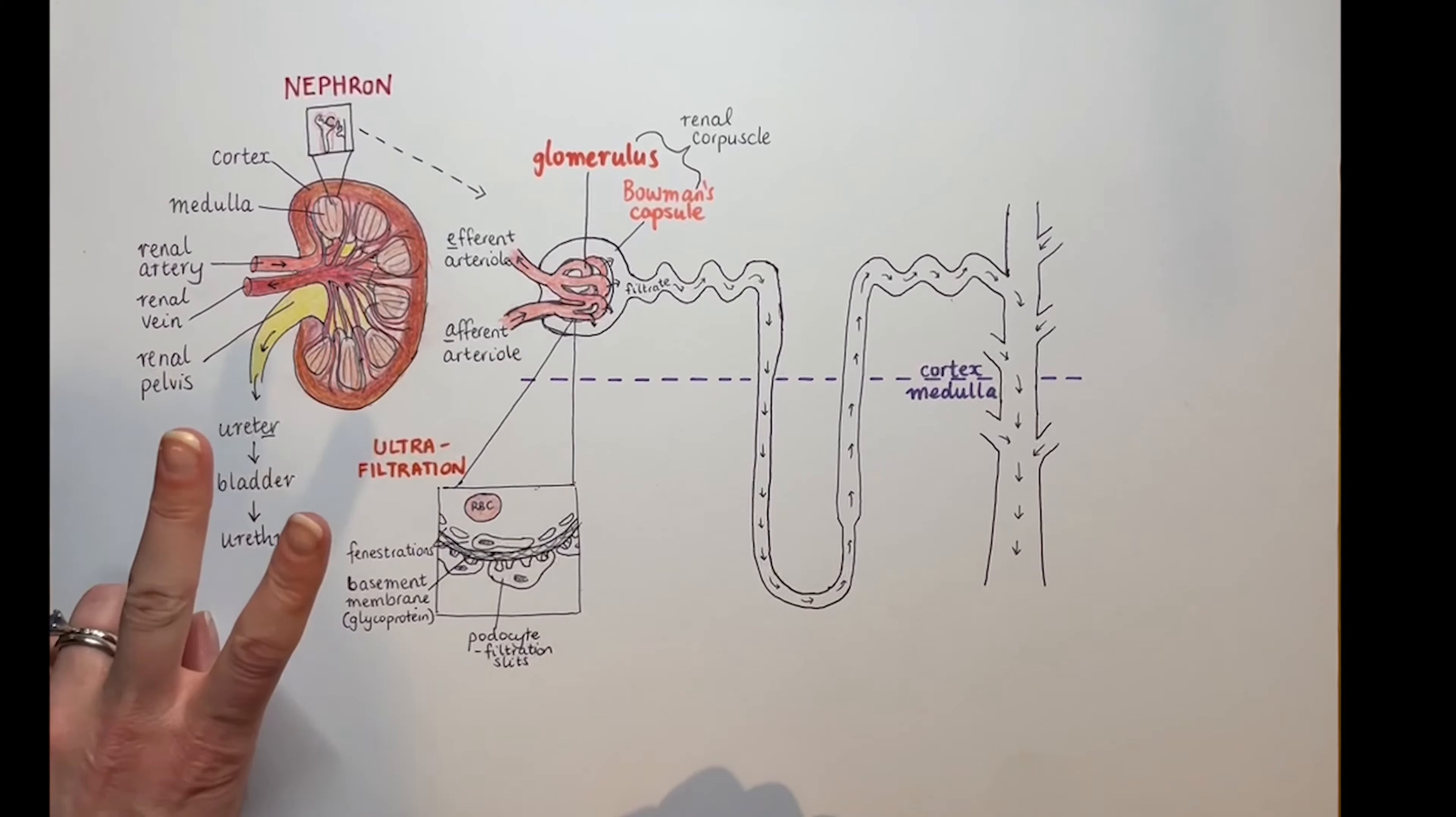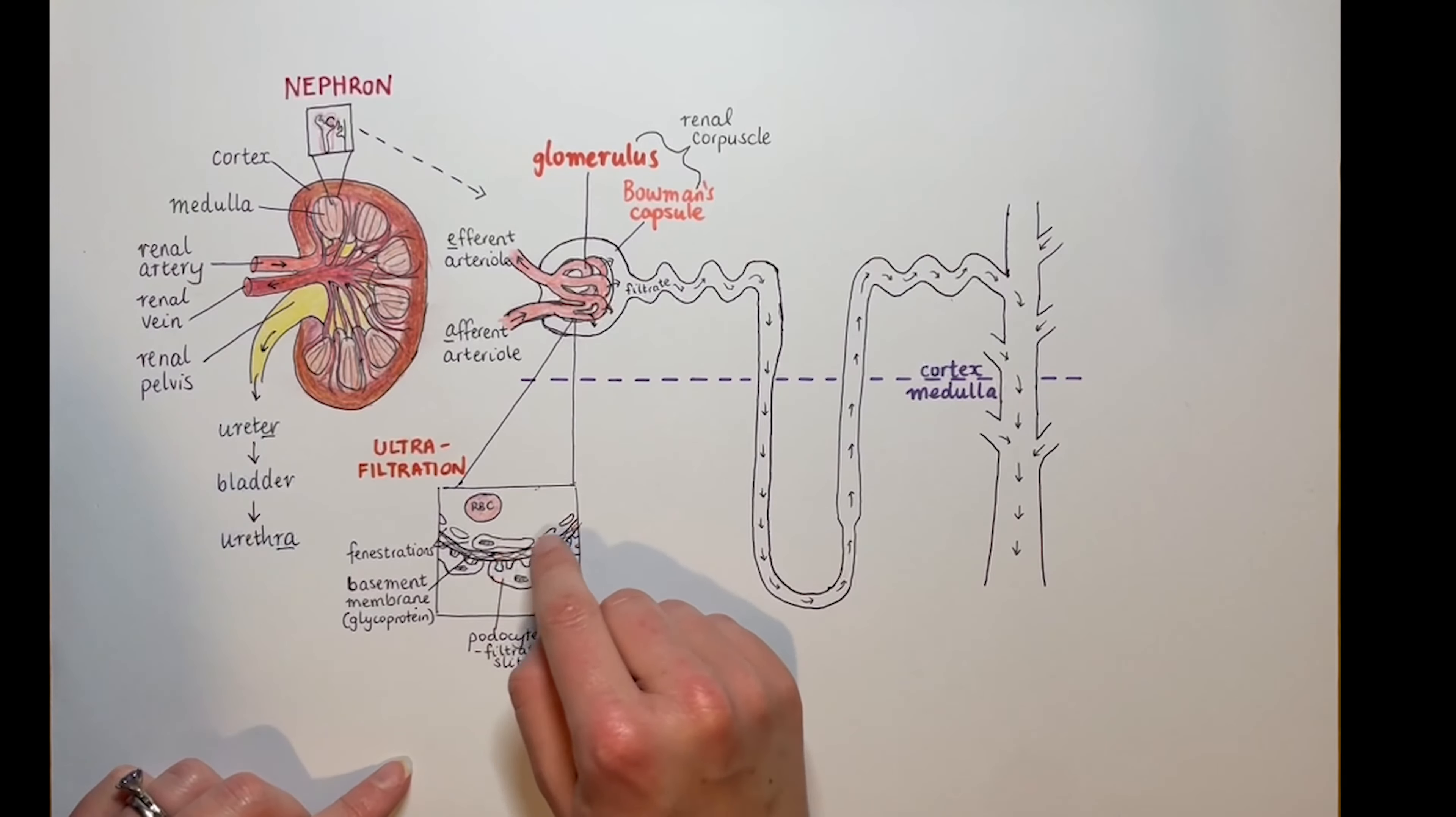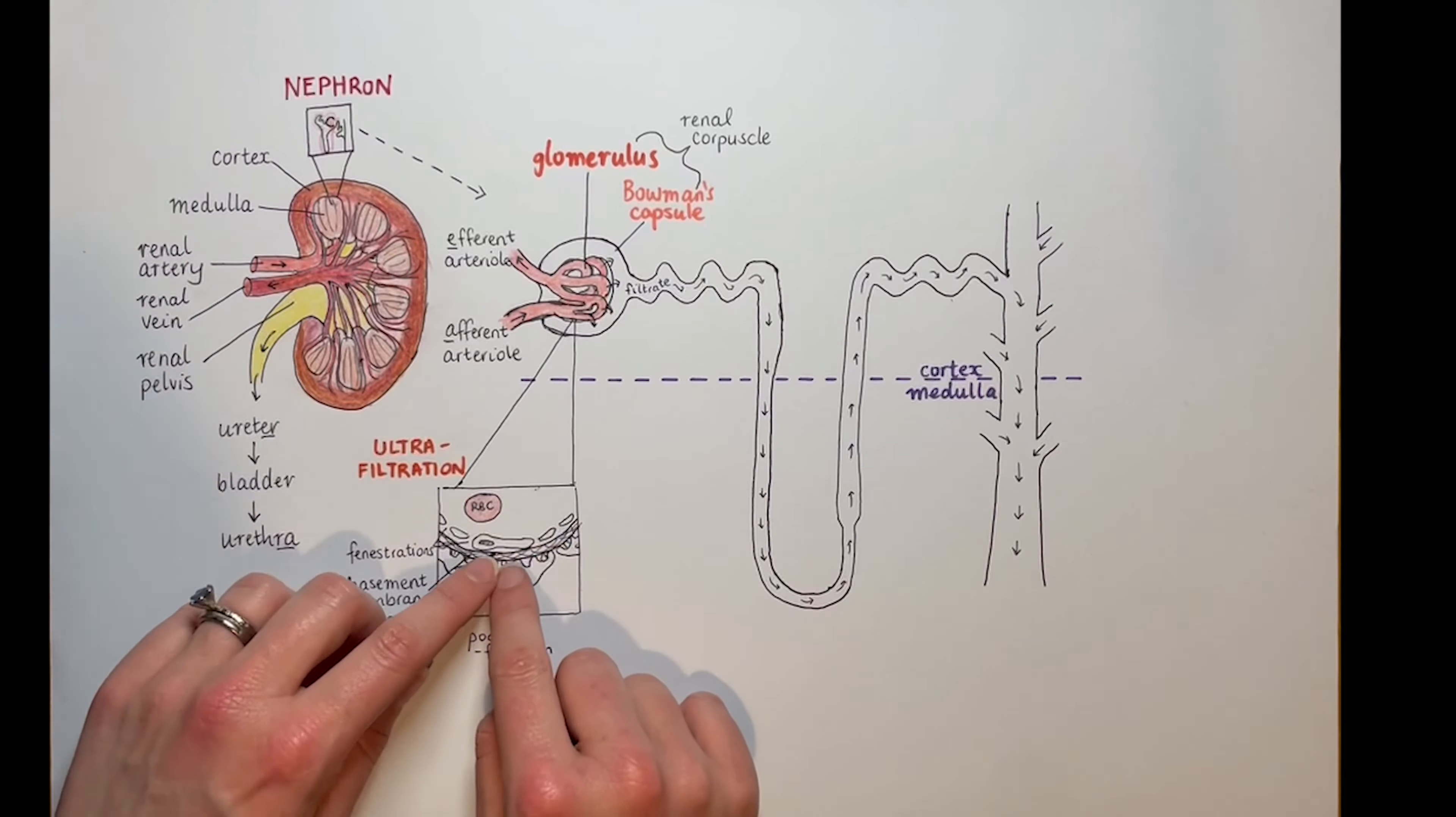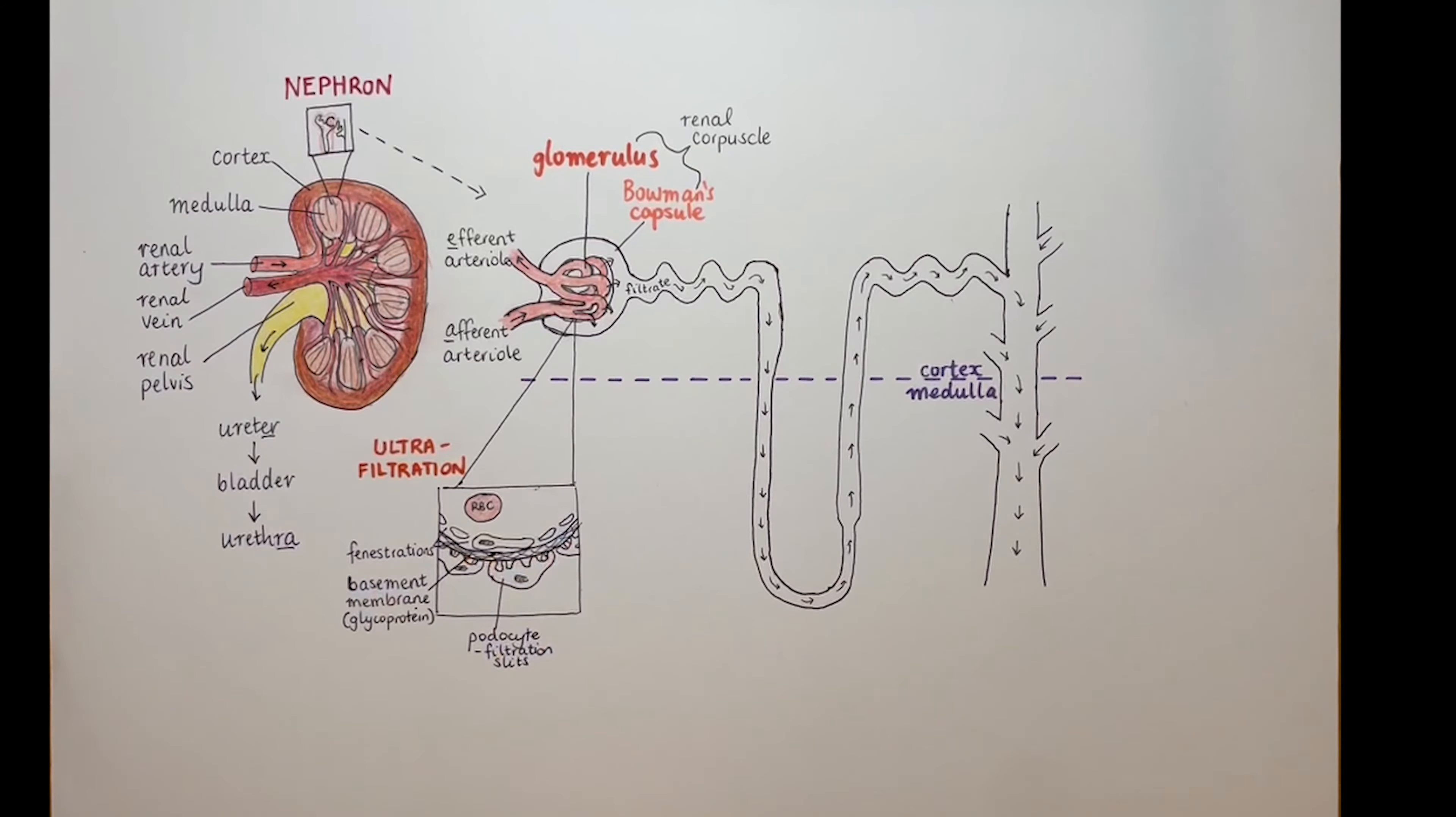Two of our sieves are cellular, they're made of cells, and the one in the middle is extracellular matrix. Your kidneys process about 180 liters of glomerular filtrate a day, which by the way is about the volume of a fridge.